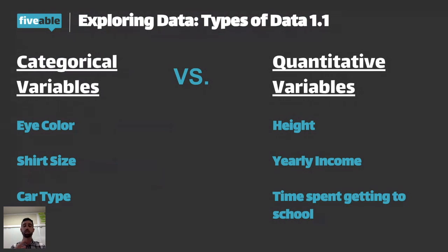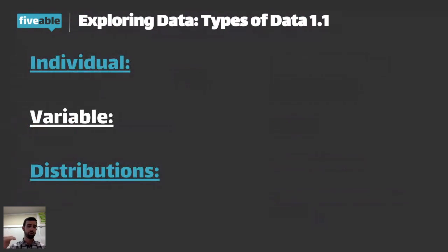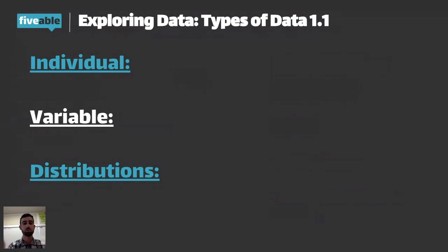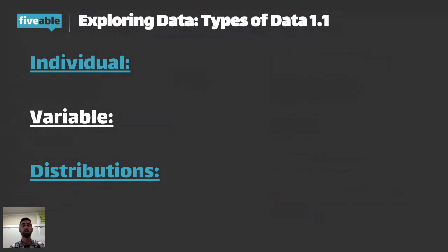So exploring data, we have the two types of data: categorical and quantitative. We also have individual, variable, and distributions. An individual is just one data point that we captured — for example, Brendan's height, or Alex's time to get to school. It doesn't have to be categorical or quantitative; it can be either one — but that's the individual. The variable is what we're measuring. So if I want to know someone's height, that would be the variable, and the individual would be whoever I sampled.